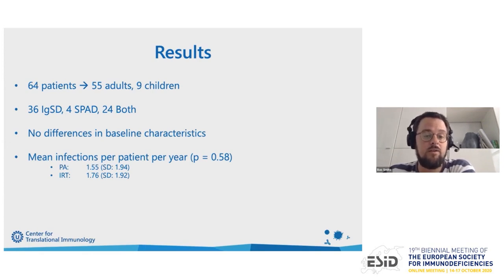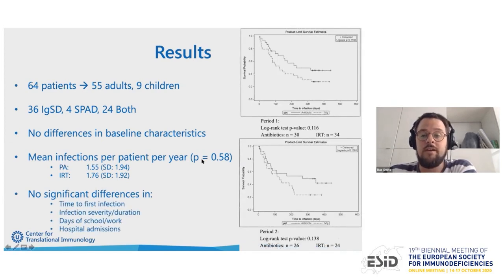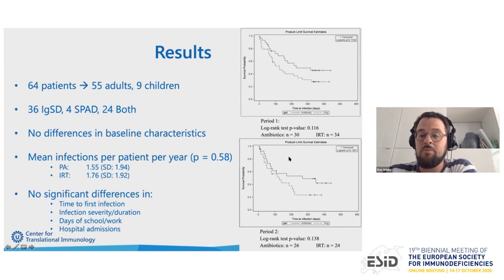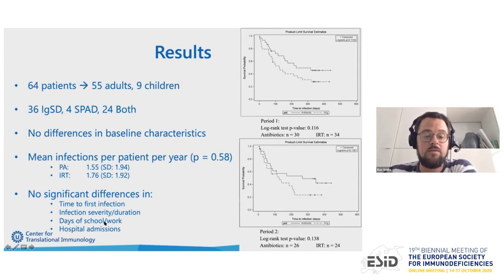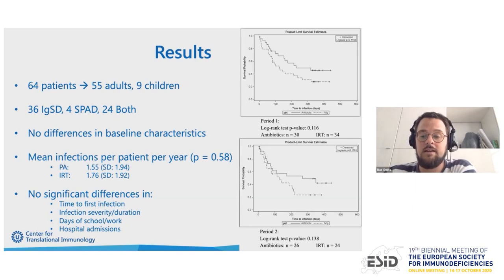We also looked at many secondary outcomes. First, we looked at time to first infection and could not find a statistically significant difference between the two treatment arms in either treatment period, though there was a minor trend towards a longer infection-free period in the prophylactic antibiotics arm. We also looked at infection severity, duration of infections, days of school or work missed by patients, and the number of hospital admissions, but could not find any significant differences in the secondary outcomes.